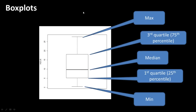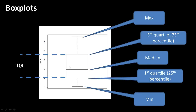The basic elements of a box plot show the maximum, minimum, median, and the first and third quartiles. The interquartile range is the distance between the third quartile and the first quartile — referred to as the IQR.